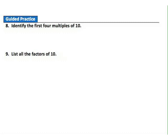Question eight: identify the first four multiples of ten. Ten times one is ten; ten times two is twenty; ten times three is thirty; ten times four is forty. So the first four multiples of ten are ten, twenty, thirty, and forty. Question nine: list all the factors of ten. The factors are the numbers that divide evenly into ten: one, two, five, and ten.